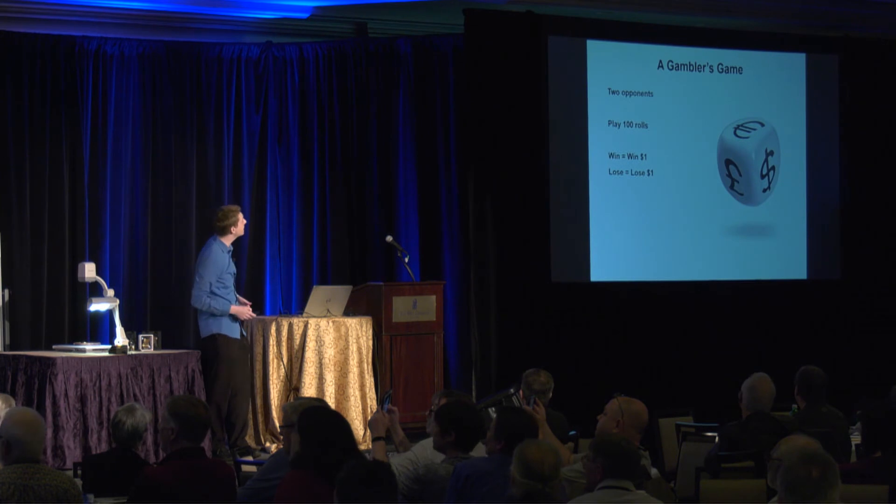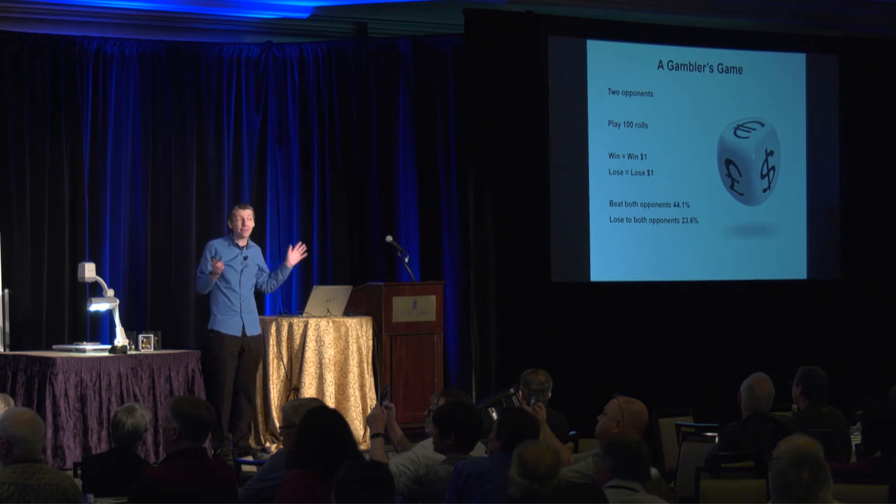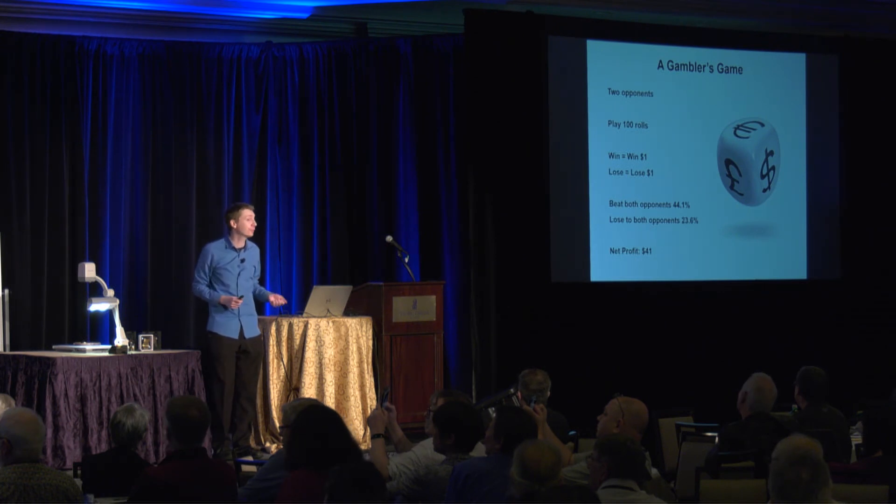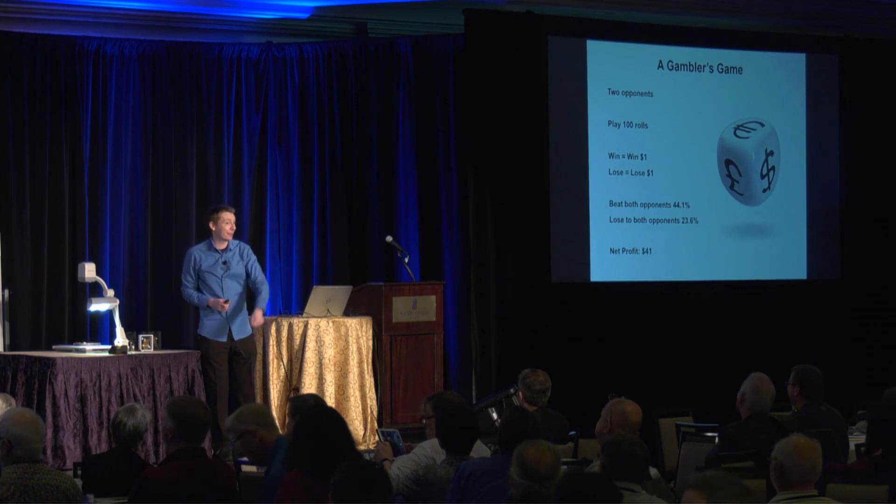You look at the probabilities. Probability of beating both opponents is about 44%. Probability of losing to two opponents is about 23 and a half percent. So the net profit on average is not zero. It's actually a net profit of 41 dollars and possibly the loss of two former friends. And I'll say thank you for now. Thank you.